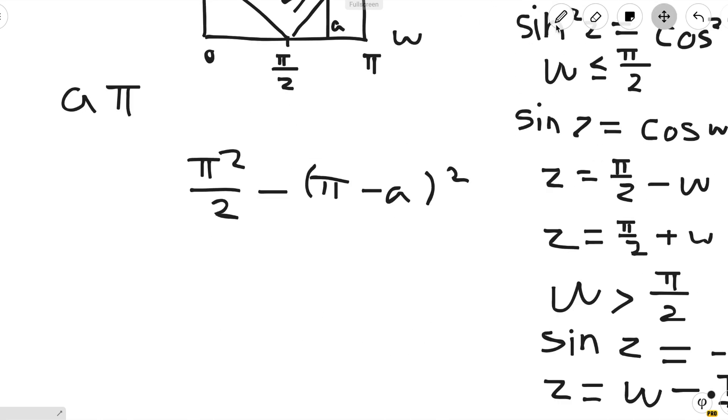So we basically want to maximize π²/2 - (π - a)². And we got that by expanding the binomial formula over aπ.